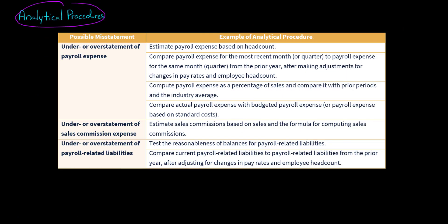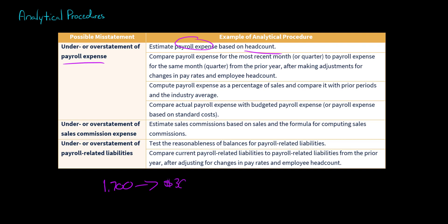Let's start with analytical procedures. If the auditor is concerned that payroll expense has been under or overstated, the auditor could estimate payroll expense based on the client's head count. For example, if the client had 1,700 employees, and the auditor estimated they should have had payroll expense of around $30 million, but the client actually reported payroll expense of $67 million — clearly that's a red flag, as the client has reported more than double the estimated amount, suggesting possible overstatement.